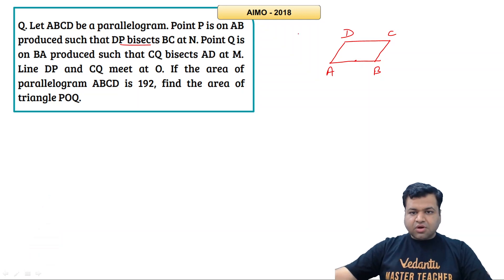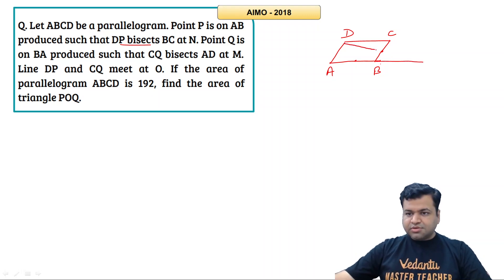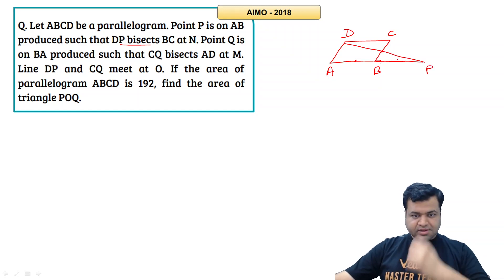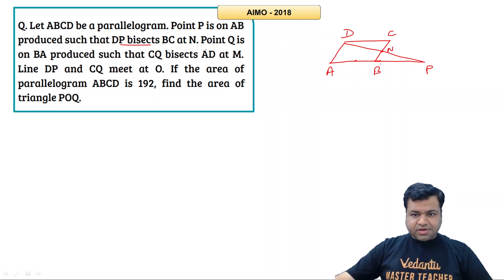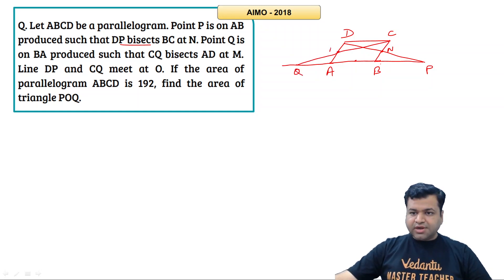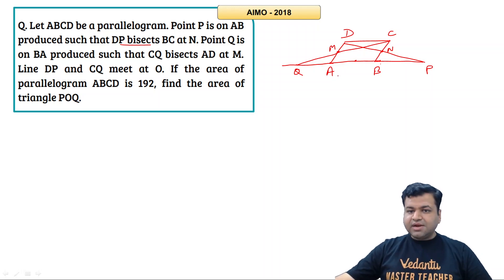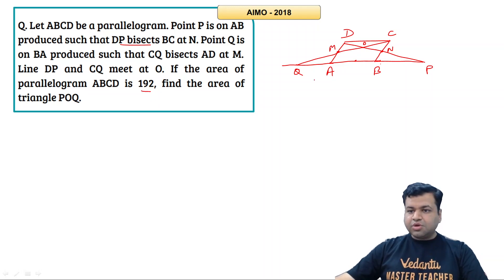Point P is on AB produced such that DP bisects BC at N. Point Q is on BA produced such that CQ bisects AD at M. Lines DP and CQ meet at O. The area of parallelogram ABCD is 192. We need to find the area of triangle POQ.